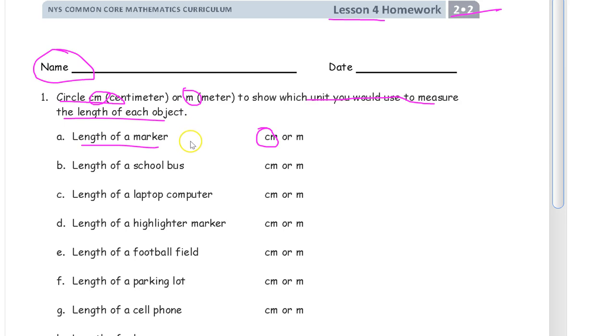Anything shorter than a centimeter ruler is going to be measured in centimeters. B. Length of a school bus. That's way too big for measurement in centimeters. It would take a lot of rulers, so we're going to measure that with meters.